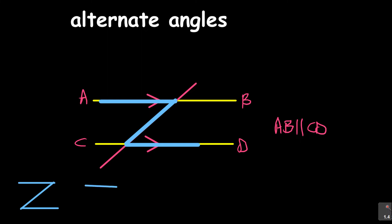So it can look like this, it can look like that — it's still a Z. It can look like that, it's still a Z. So it depends, it's more of a Z and an N — you've got a Z and an N that is inverted in a way. Now look at this: if we're talking about alternate angles, we are saying if that angle here, we've got an angle here, look at that angle — it is equal to that angle. That's what we mean by alternate angles.